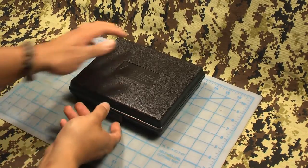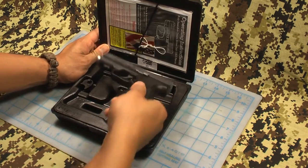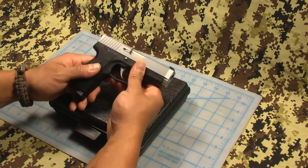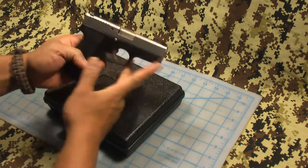Here we have a Kahr Arms model CW-9. If you watch my recent shooting range videos, I shot this, I shot 50 rounds through this. Mostly perfect.